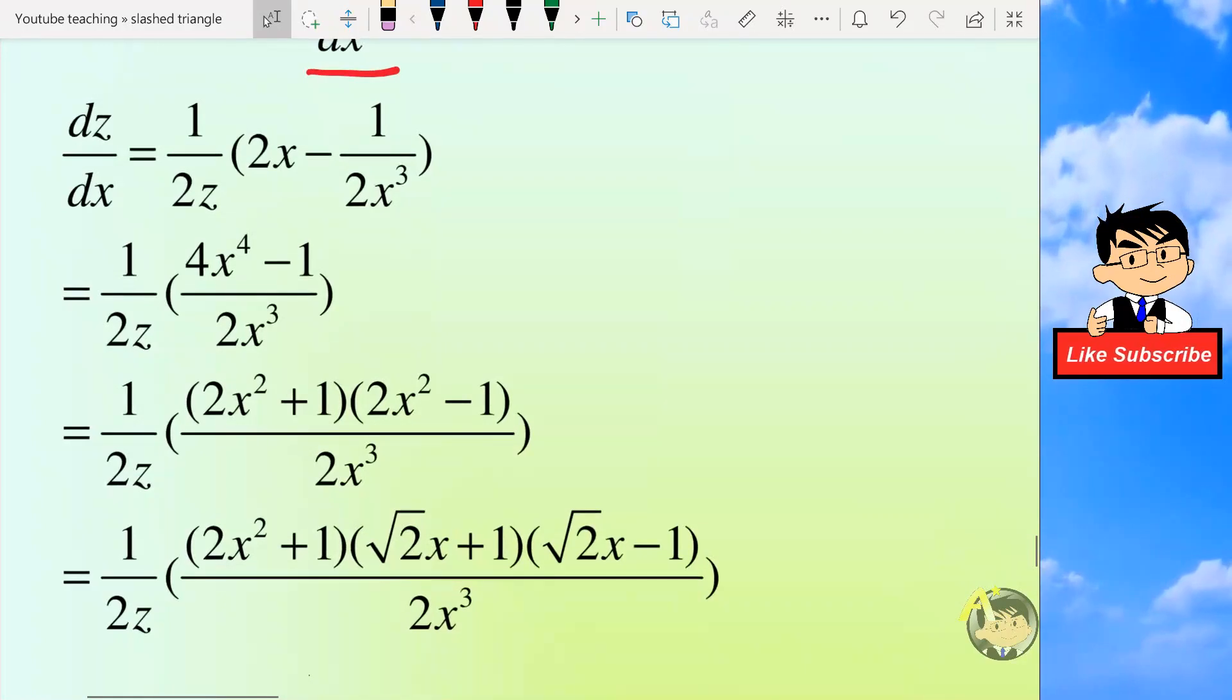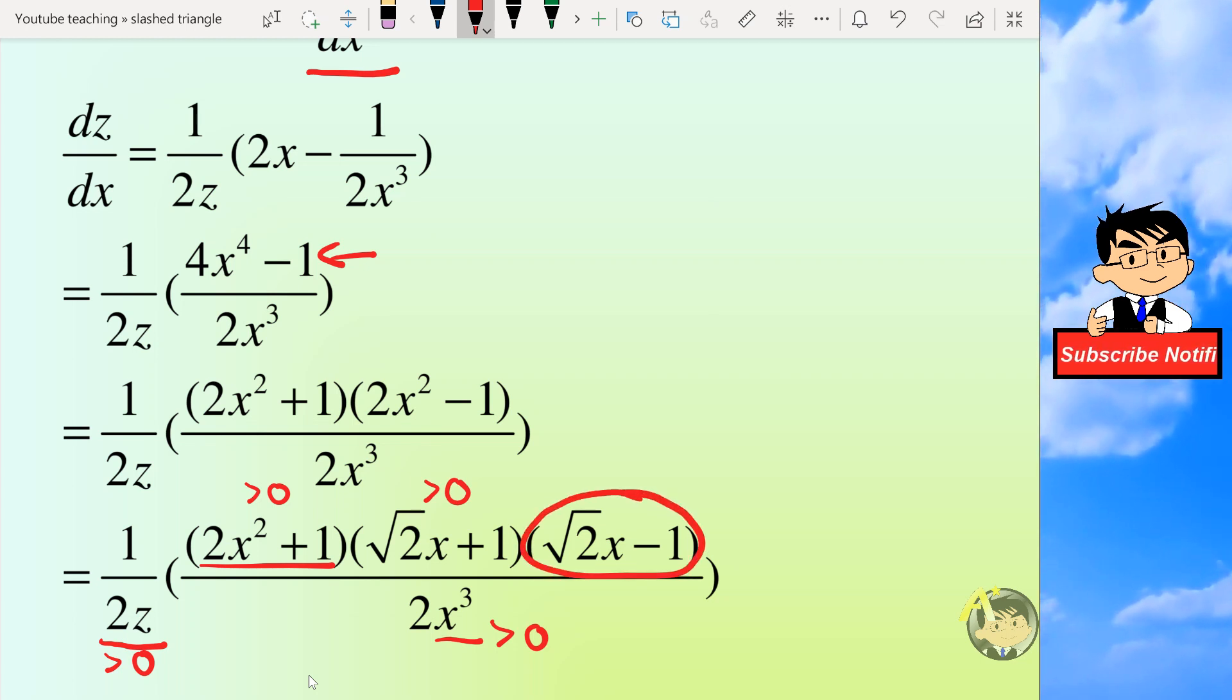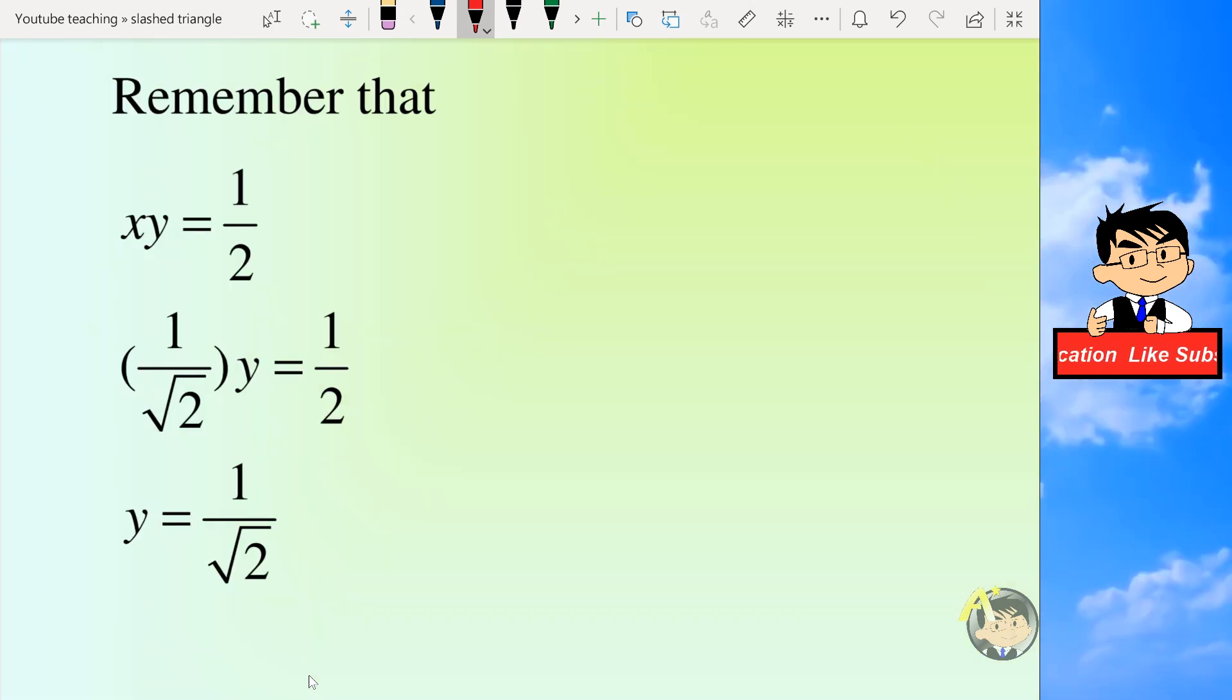Notice that we can factorize the expression in the numerator two times. And then for these terms, z which is greater than 0, 2x squared plus 1 which is greater than 0, x which is greater than 0 also, and root 2x plus 1 also greater than 0. So we'll have one term here, root 2x minus 1, which can be negative. So we can check that for x greater than 1 over root 2, the dz over dx will be positive. And for x less than 1 over root 2, dz over dx will be negative. And we can conclude that z obtains its minimum when x equals 1 over root 2.